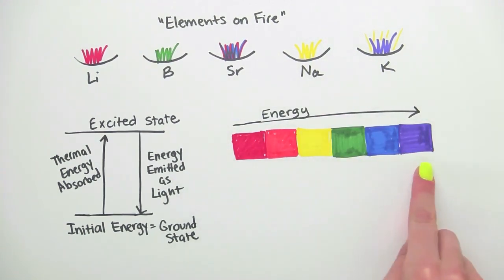So energy increases along the spectrum. Red is low energy light and violet is high energy light.